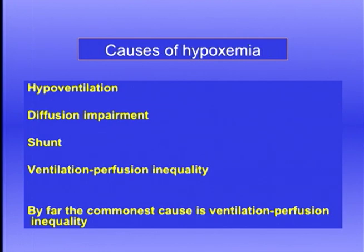The causes of hypoxemia we've talked about previously. There are four: hypoventilation, diffusion impairment, shunt, and ventilation-perfusion inequality. In the context of respiratory failure, by far the most important cause is ventilation-perfusion inequality. In V/Q inequality, we include blood flow to unventilated lung in areas of atelectasis, which you could call shunt — that's included in the V/Q inequality story.